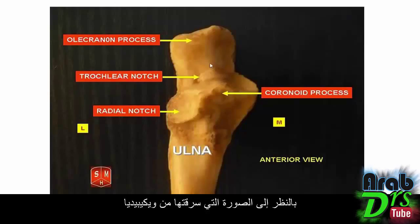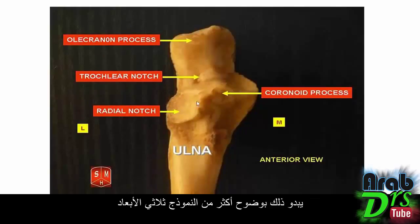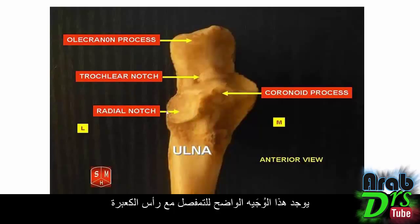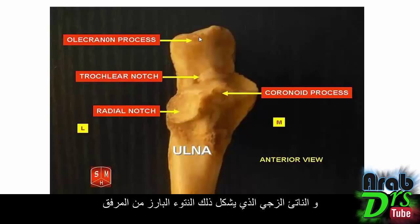Looking at a diagram from Wikipedia, you can more clearly see the coronoid process, the radial notch on the ulna articulating with the radial head, the trochlear notch articulating with the trochlea of the humerus, and the olecranon process which forms the bony prominence at the elbow.